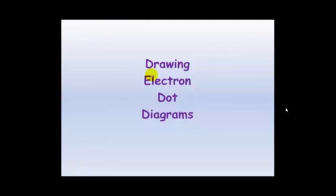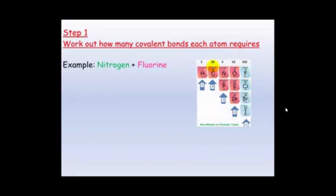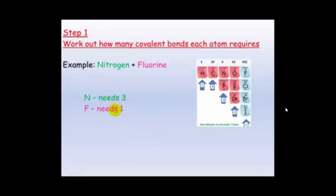So how do we draw these electron dot diagrams? This is a step-by-step guide. The first step is you need to work out how many covalent bonds each atom requires, and we can do this by looking at the periodic table. We're going to do an example with nitrogen and fluorine. Nitrogen is in group 5, and it requires 3 more electrons to get a full outer shell. Fluorine is in group 7 — it's got 7 in its outside shell, so it needs 1 more electron. This is the number of covalent bonds they're going to form.